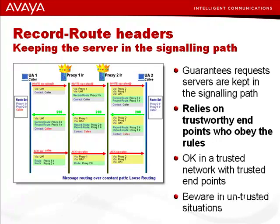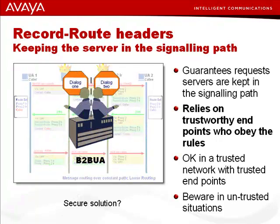So what if you're not in a trusted environment? Is there a more secure solution? There's an application model in which the server actually becomes the endpoint rather than a midway proxy, and it's used almost all the time. It's a great idea that gives the server complete control regardless of the trustworthiness of the clients. It's called the B2BUA, or Back-to-Back User Agent. We'll discuss it in depth in the next lesson.